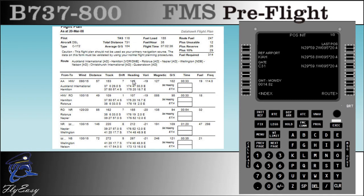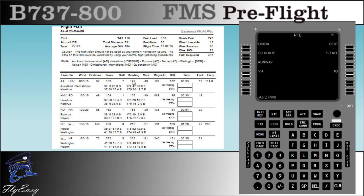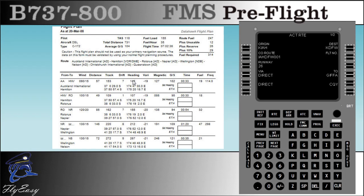Next is to load the route of flight. Press line select 6 right to access the route pages. When the route page first appears, notice the origin appears in the scratchpad — line select it to 1 left. To automatically load a company route, you will need to enter the departure airport, arrival airport, and the route number from the flight plan to the scratchpad and line select 2 left. Activate by pressing line select key 6 right, and in order to execute, press the execute key. Now all waypoints, crossing restrictions, and all other data are automatically loaded in the FMC. Check the route pages using the next or previous page keys. If a company route is not available, you'll manually enter the two waypoints on the right and the via routes or airways on the left side of each line.